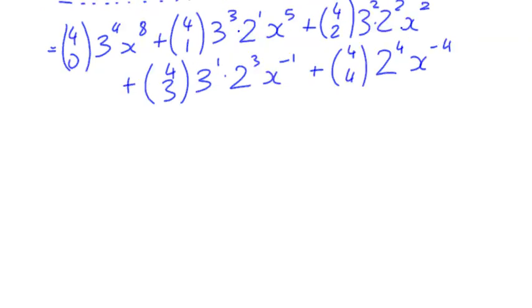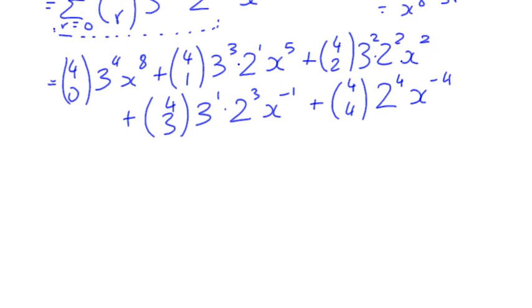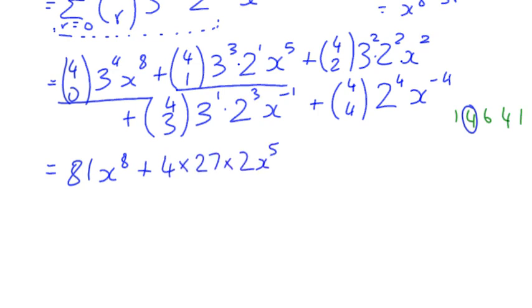I've got maybe a bit of extra work to do here. I've got row 4 of Pascal's triangle: 1, 4, 6, 4, 1 for all my coefficients. So that means I've got 1 times 3 to the 4 is 81 times X to the power of 8. My next term, I've got 4 times 27 times 2x to the 5. Plus 6 times 9 times 4x² plus 4 times 3 times 8x to the negative 1 plus 1 times 2 to the 4 is 16x to the negative 4.